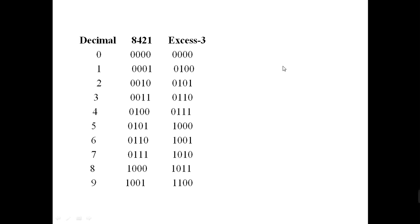To summarize: we have covered three binary codes. First, 8421 code — a weighted code. Second, 2421 code — also a weighted and positively weighted code. Both 2421 and XS3 are self-complementing codes. XS3 is an unweighted code used in earlier computers. In the next class, we will cover 8 4 minus-2 minus-1 code (negatively weighted), Gray code, and ASCII codes. Thank you, students — keep watching.